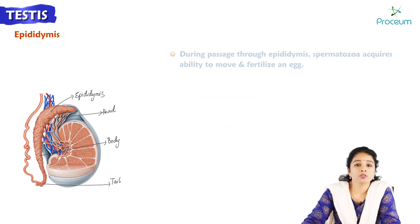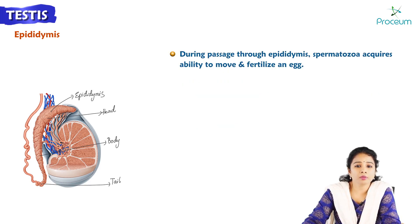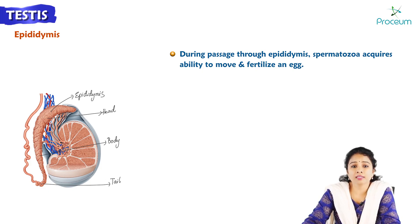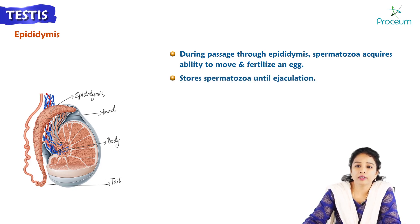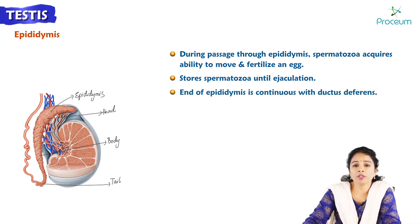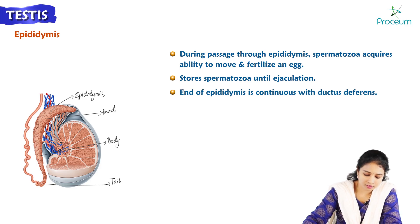During passage through the epididymis, spermatozoa acquire the ability to move and fertilize an egg. The epididymis also stores spermatozoa until ejaculation. The end of the epididymis is continuous with the ductus deferens.